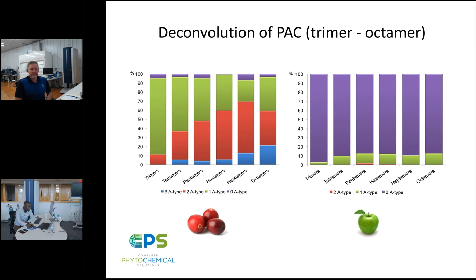There is no theoretical limit to the size we can detect. However, the larger the oligomer, the more complex the number of different iterations and variations at the degree of polymerization, making it more difficult to resolve those from the baseline due to the complex nature of the polymer.